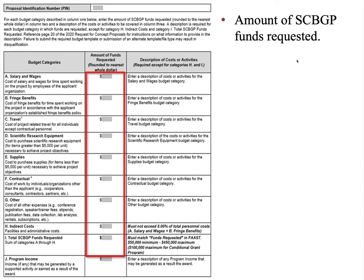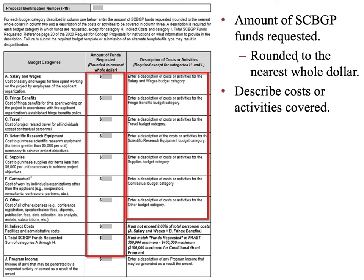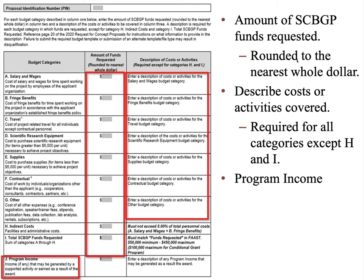This is what the budget template looks like. Please use your experience and knowledge to decide if the applicant gave enough information to determine reasonableness and measurable benefits in relation to each dollar spent. The 'Amount of Funds Requested' column is where applicants enter their total funds requested for each category, rounded to the nearest whole dollar. The 'Description of Costs and Activities' column is where applicants list the costs or activities covered. A description is required for each budget category in which funds are requested, except for categories H and I. Lastly, you can see if the project will generate any income as a result of the award, which will have to be reinvested back into the project.